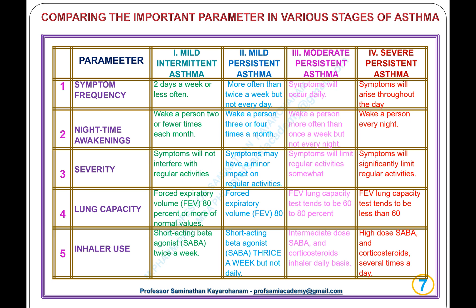Stage 3, moderate persistent asthma: symptoms occur daily; nighttime awakenings more than once a week but not every night; symptoms will somewhat limit regular activities; FEV between 60% and 80%; intermediate-dose SABA and corticosteroid inhaler on a daily basis.